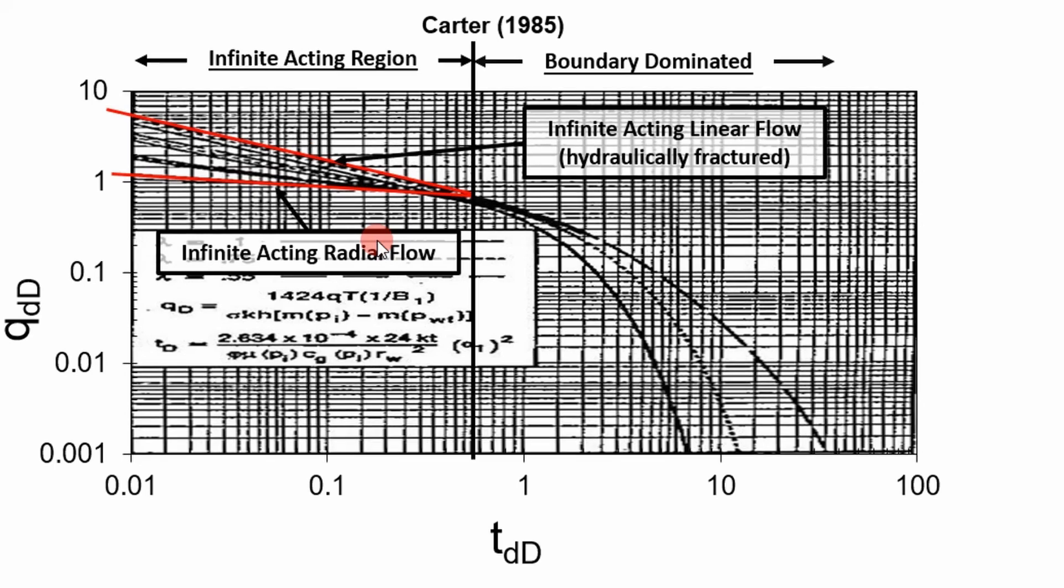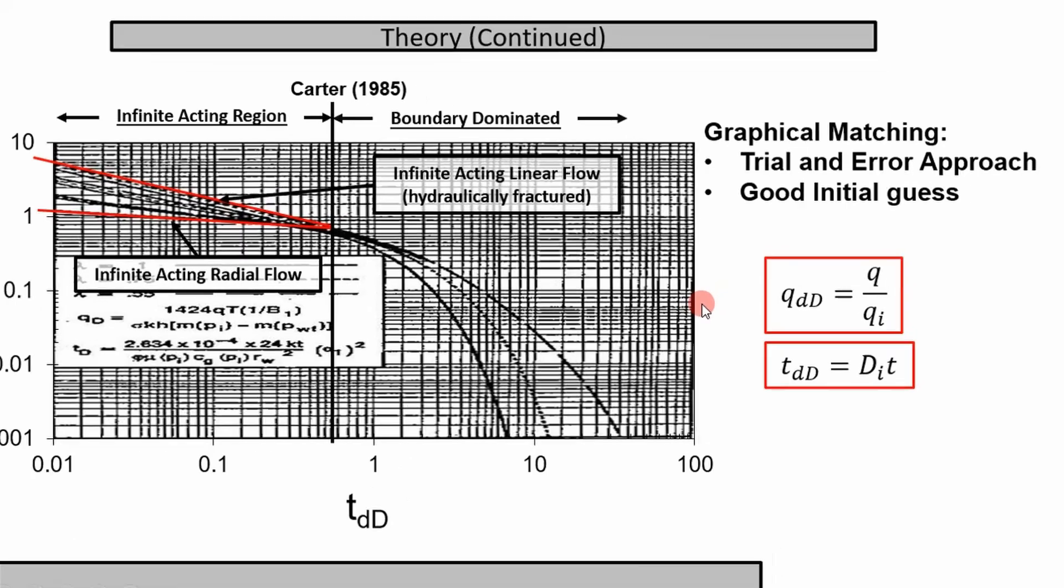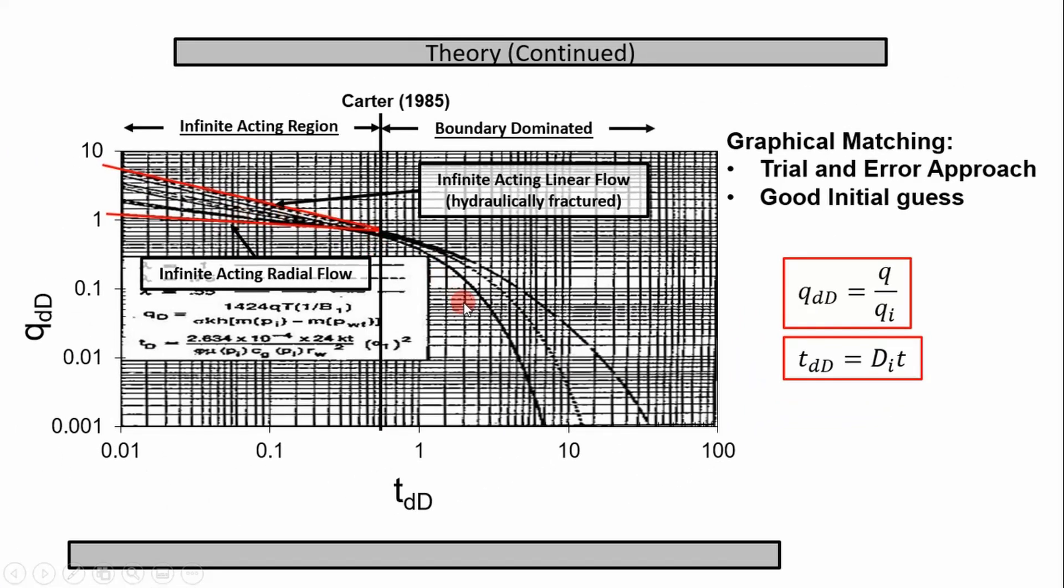The basic procedure to put your data on here and have it matched to one of these is just a trial and error approach. A good initial guess is to take all your flow rate points and divide it by the initial rate. And also take all your time data and multiply it by the initial decline. And you can get these from your rate cube or rate time analysis. That'll get you a good starting point to get it on here, and then you can fine tune it with trial and error if you need to.